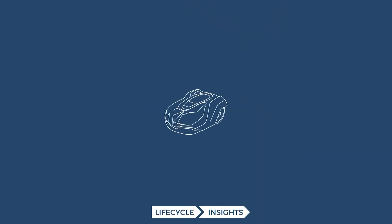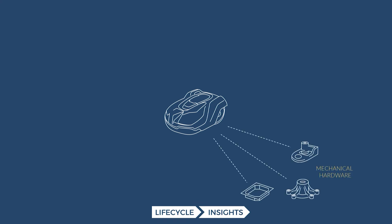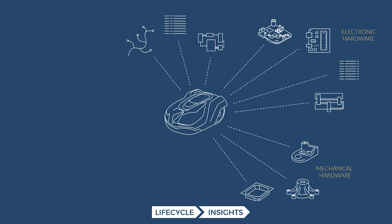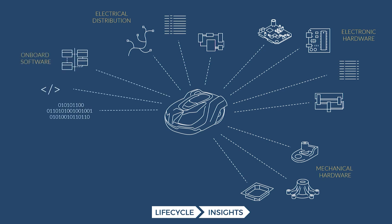Today's products are composed of content from a lot of different engineering domains. You certainly have mechanical hardware, but as we transition to smart connected products, you're seeing a lot of electronic hardware — whether that's circuit boards, sensors, or a lot more. You also have electrical distribution systems delivering signals around the product or power to different electrical endpoints, as well as a lot of software definitions — one area of explosive growth in smart connected products.